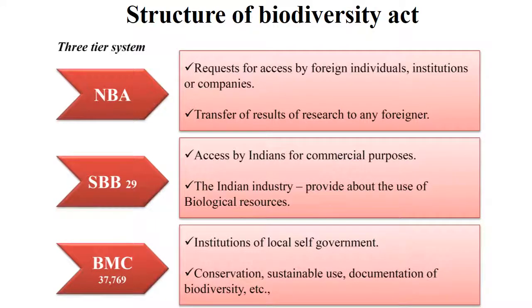The structure of the Biodiversity Act has a three-tier system. First is the National Biodiversity Authority, which handles requests for access by foreign individuals, institutions or companies, and transfer of research results to foreigners. Second is the State Biodiversity Board, which handles access by Indians for commercial purposes. Third is the Biodiversity Management Committee, which is for local self-government institutions, covering conservation, sustainable use and documentation of biodiversity.